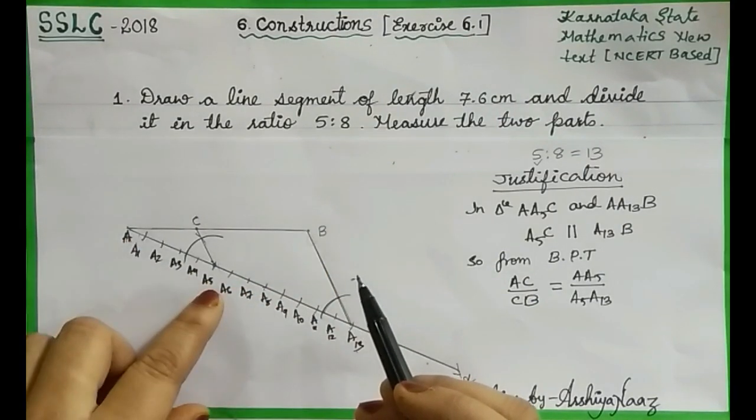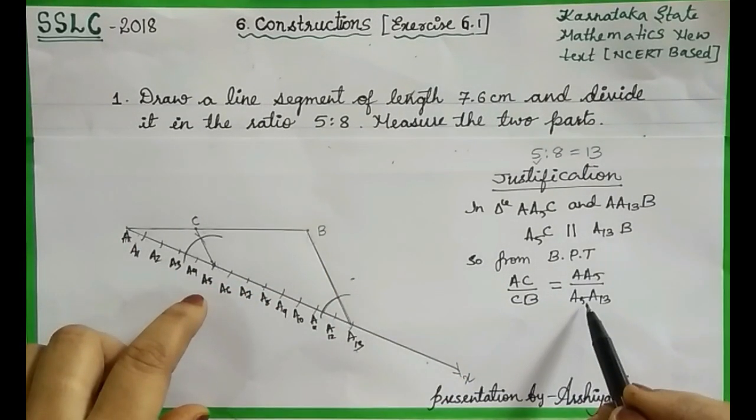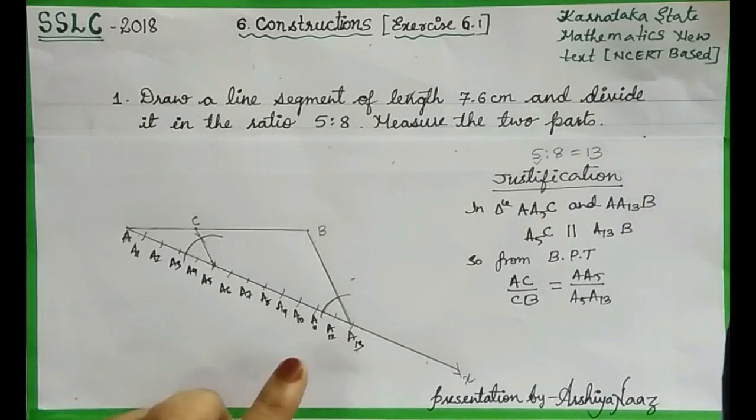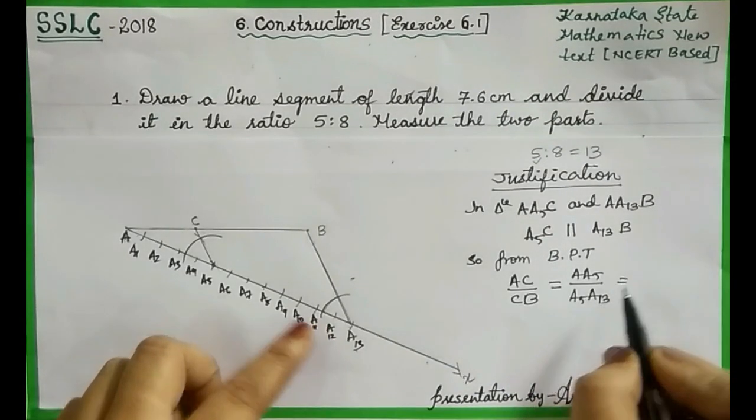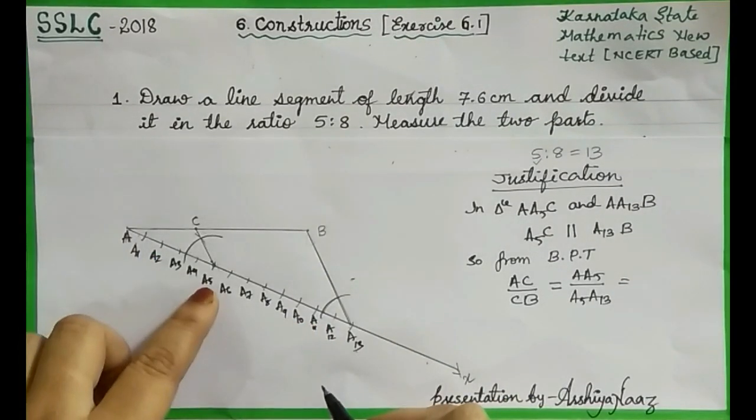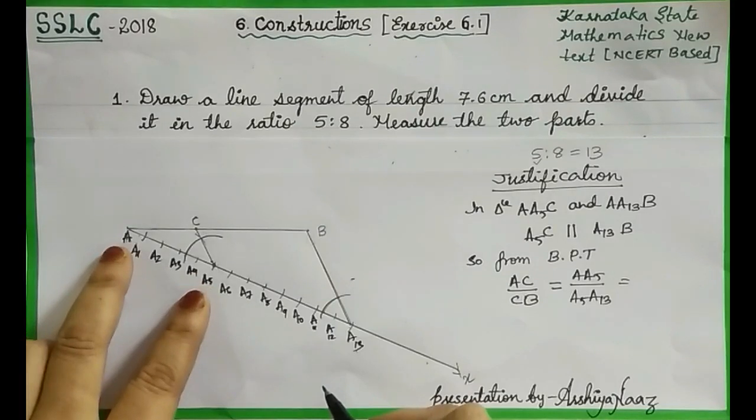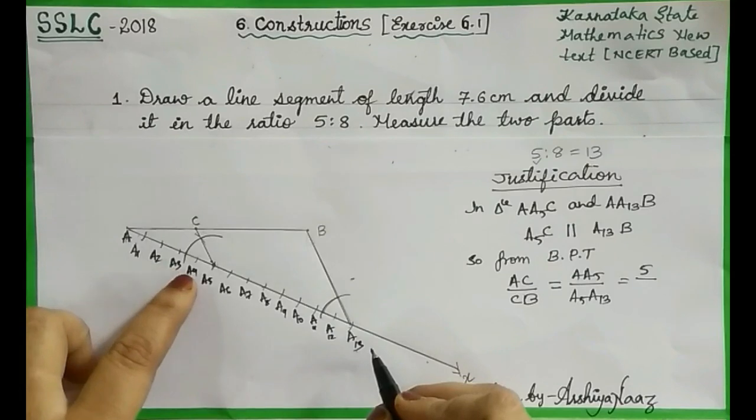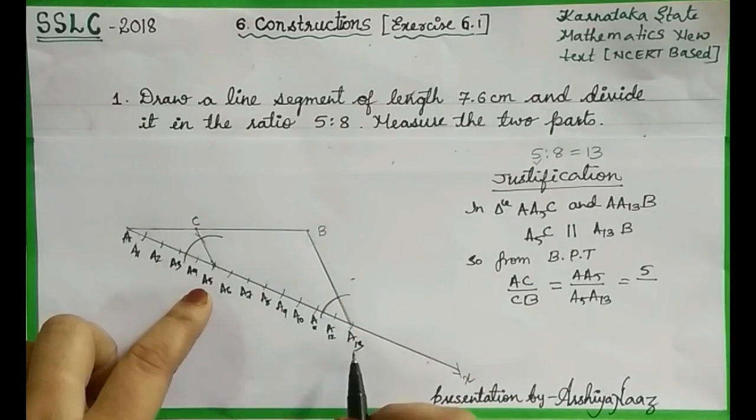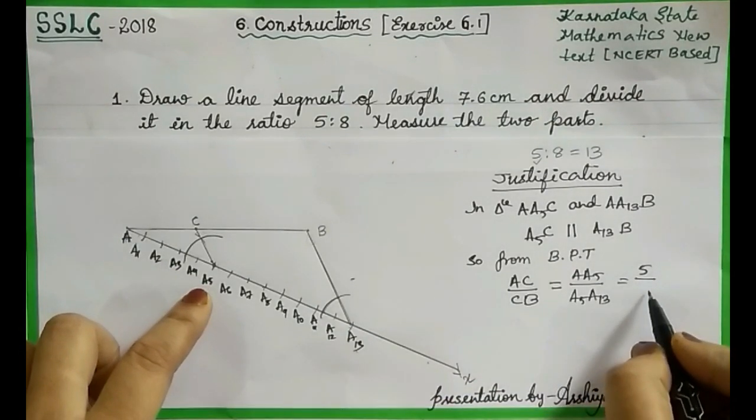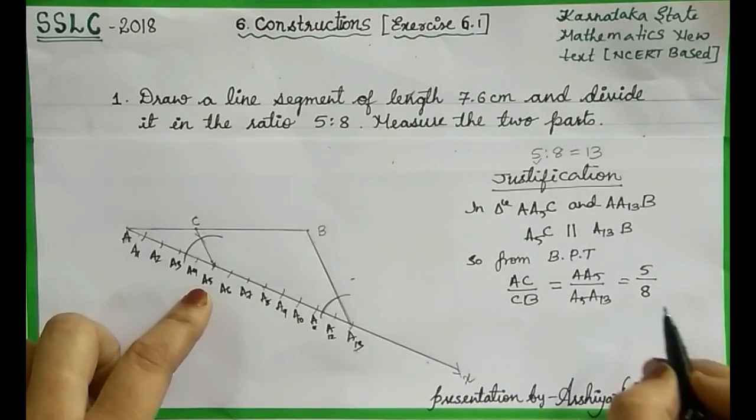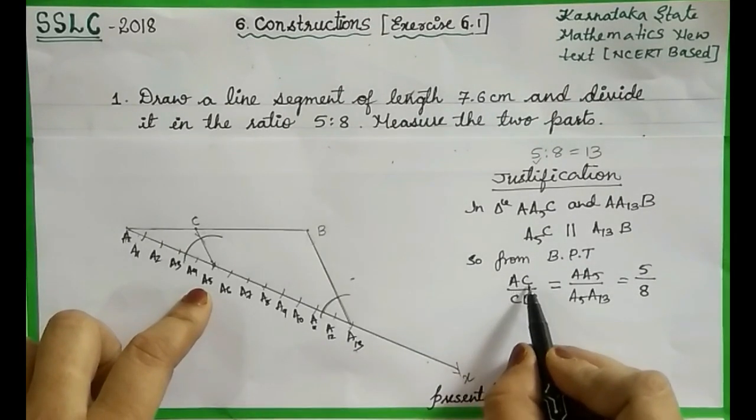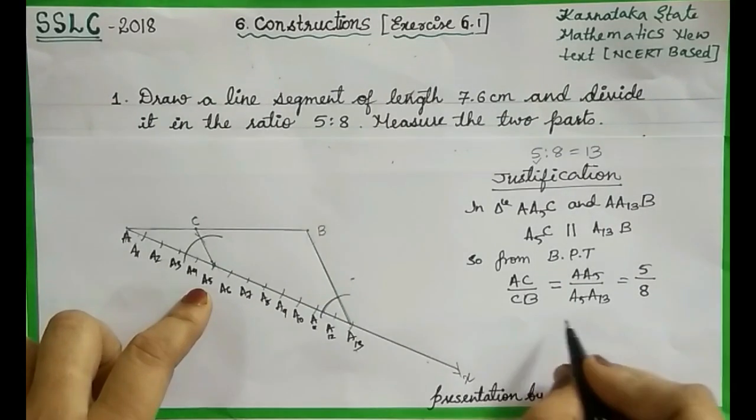We know that from A to A5 we have five equal parts: 1, 2, 3, 4, 5. From A5 to A13 we have eight equal parts. So AC by CB is equal to 5 by 8.